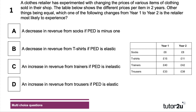A clothes retailer has experimented with changing the prices of various items — socks, t-shirts, trainers, and trousers — shown in year one and year two in the table. Other things being equal, which of the following changes would the retailer be most likely to experience? Look at the price changes, think about the elasticity implications, and have a go at question number one.